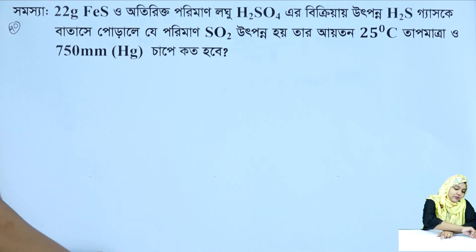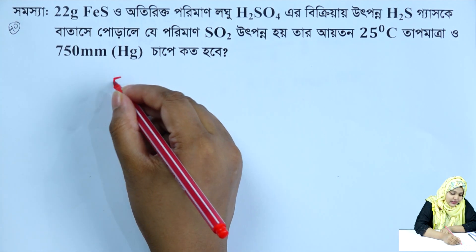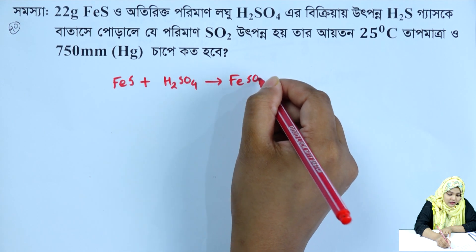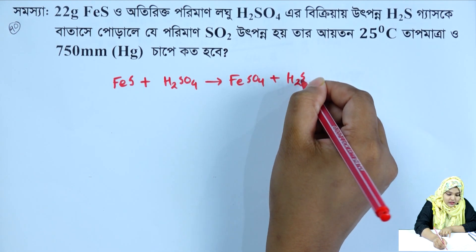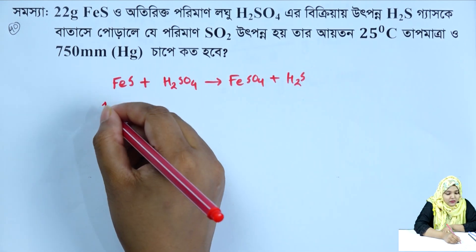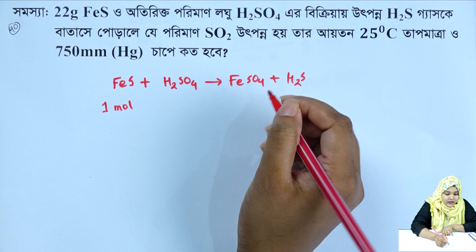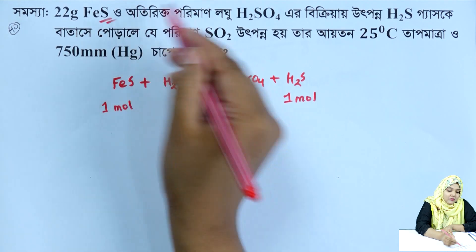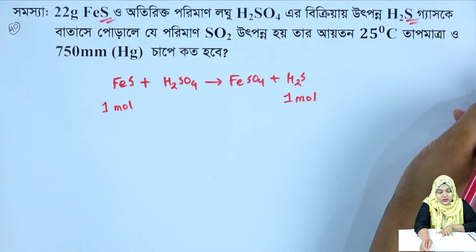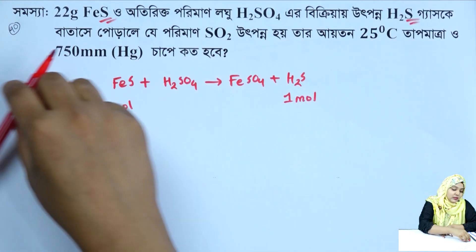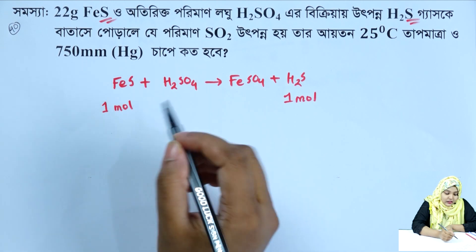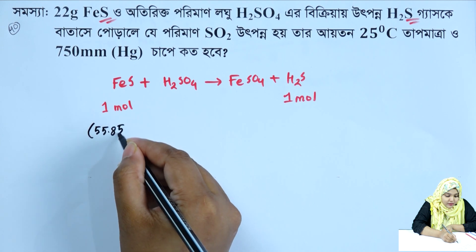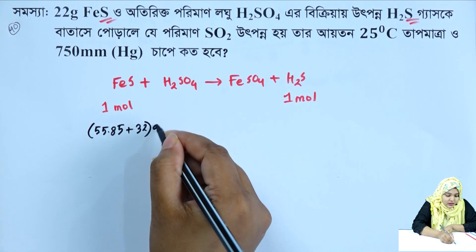Ferrous sulfide reacts with dilute sulfuric acid to produce ferrous sulfate and hydrogen sulfide gas. So 1 mol ferrous sulfide gives 1 mol hydrogen sulfide. The atomic mass of iron is 55.85, plus sulfur 32 grams.